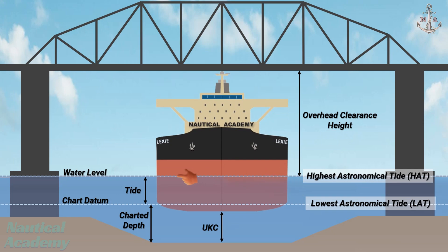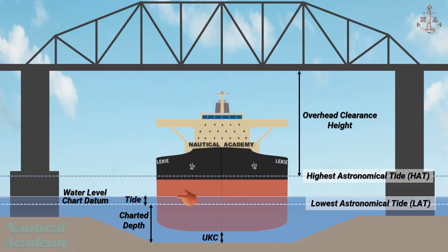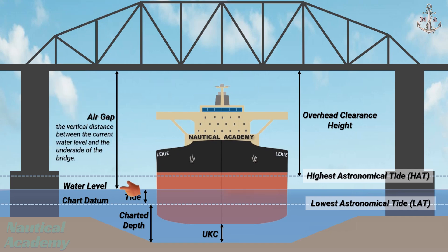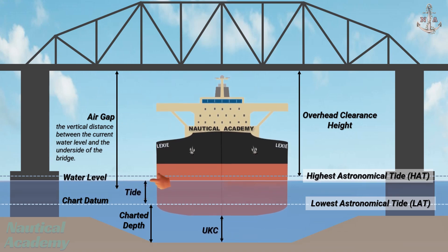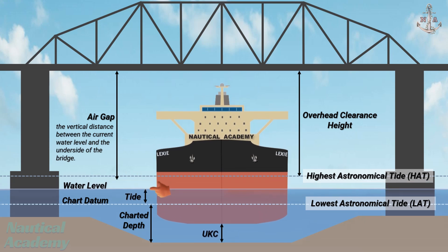In reality, the actual water level is usually somewhere between these two extremes. It rises and falls constantly due to the tide. This creates what we call the air gap — the vertical distance between the current water level and the underside of the bridge. When the tide rises, the water level increases and the air gap decreases. As the tide falls, the water level drops and the air gap increases.